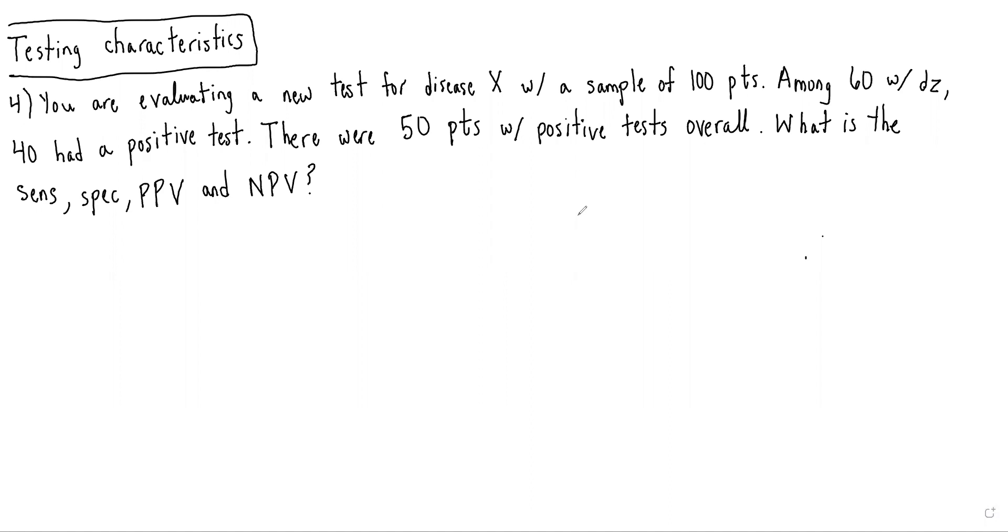So in this case, we are evaluating a new test for disease X with a sample of 100 patients. Among 60 with disease, 40 had a positive test, and there are 50 patients with positive tests overall. The question is asking: what is the sensitivity, specificity, PPV, and NPV?